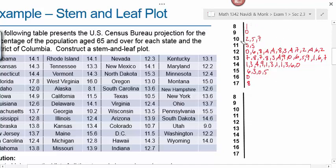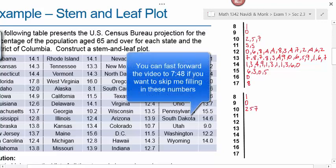Once you have all the data in the right place, the next step is to arrange each row in numerical order from least to greatest. It's not necessary to put commas between these numbers since each single digit counts as an individual leaf value. For stem 8 we just have one number; for 9 we have 0; for 10 we have 2, 5, 7; and for 11 we have 5, 5.